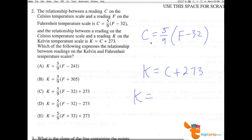K equals, I'm going to substitute this C in here as the five-ninths times F minus 32. So five-ninths times F minus 32. And then I obviously am adding my 273 on the end.